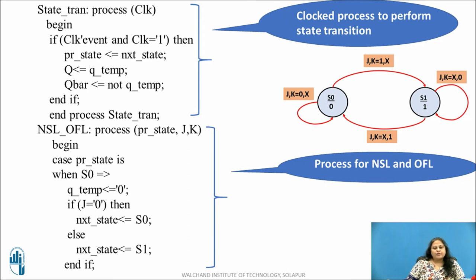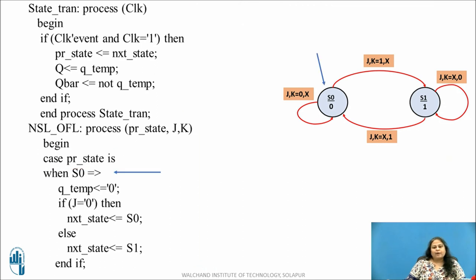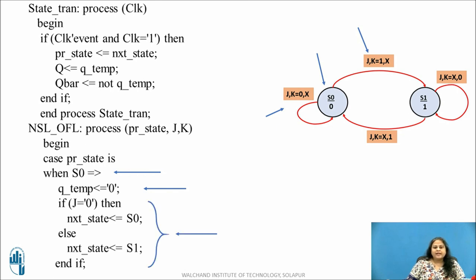Another process block is used to implement the next state logic. The output function logic can also be implemented in the same process block as the next state logic. To model the state, a case statement is used. When present state is S0, the output is logic 0, so QTEMP is assigned 0. From the state diagram, when J equals 0 the next state is S0, and when J equals 1 the next state is S1. This is modeled using an if-else statement inside the case statement.